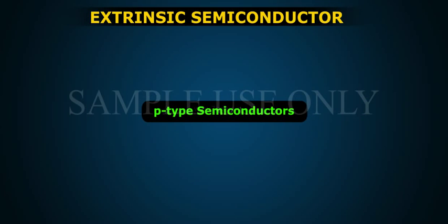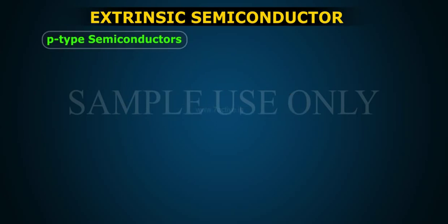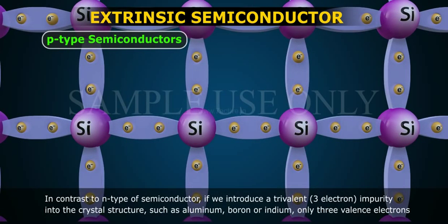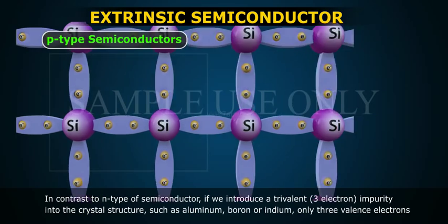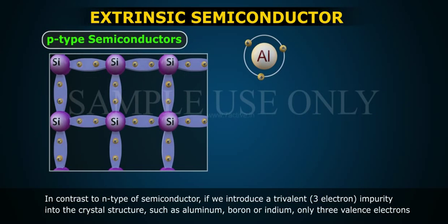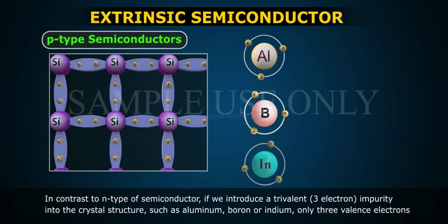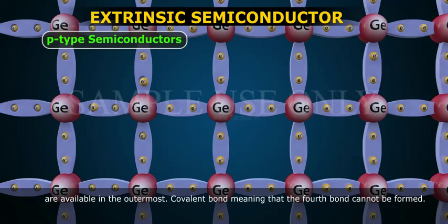P-type semiconductors. In contrast to N-type semiconductor, if we introduce trivalent three-electron impurity into the crystal structure, such as aluminum, boron, or indium, only three valent electrons are available in the outermost covalent bond, meaning that the fourth bond cannot be formed.